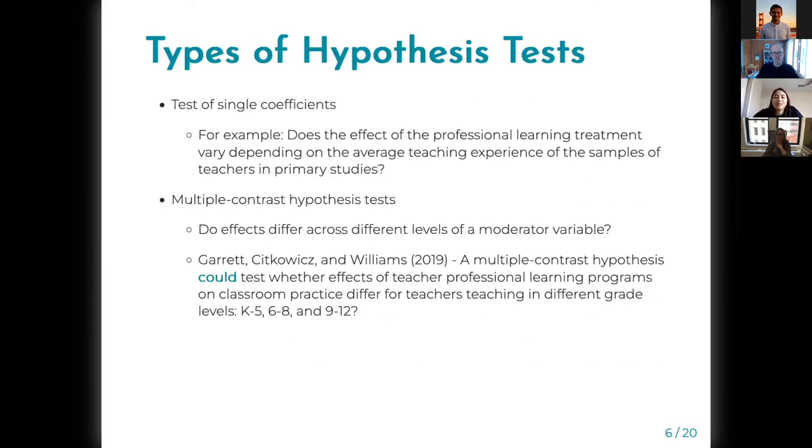There are two types of hypothesis tests that meta-analysts usually conduct. One of them is tests of single coefficients. An example of that is, does the effect of some professional learning treatment vary depending on the average teaching experience of the samples of the teachers in the primary studies. It's just like the interpretation of a single coefficient from a regression model.